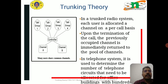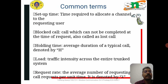In a trunked radio system, each user is allocated a channel on a per-call basis — this is the solution for the problem statement given in the first slide. Upon termination of the call, the previously occupied channel is immediately returned to the pool of channels. In telephone systems, trunking theory is used to determine the number of telephone circuits that need to be allocated for office buildings.